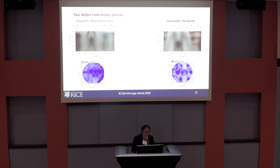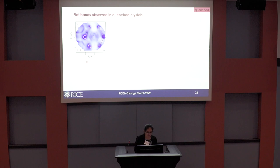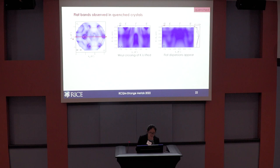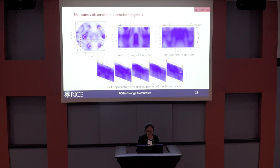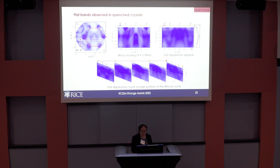The even more interesting case is the quenched crystals. Immediately the Fermiology looks different — if you take the same high-symmetry cut, the crossings at the K point are lifted. More interestingly, we see very flat dispersions going across the Brillouin zone. Probing the entire Brillouin zone with a series of cuts, you can clearly observe three sets of flat bands, which are quite flat over a large portion of the zone, except where they hybridize with dispersive bands near the gamma point — showing they are intrinsic to the crystals.